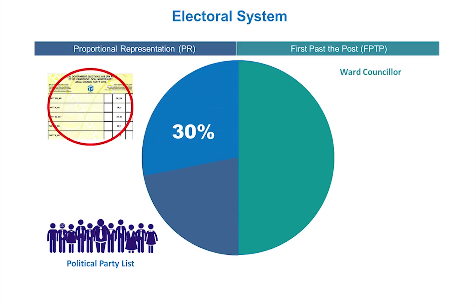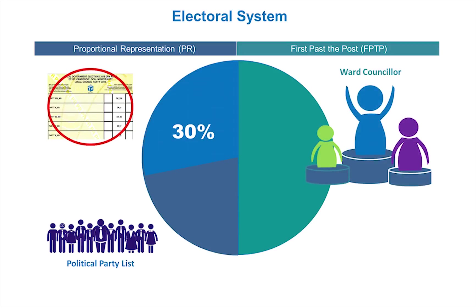The first-past-the-post or majoritarian system is used in South Africa when ward councillors are elected during local government elections. The candidate who receives the highest number of votes wins the election.